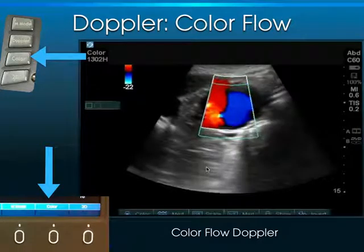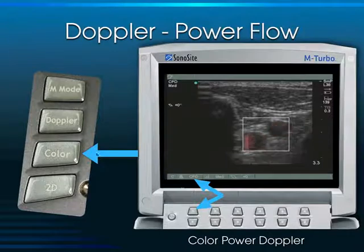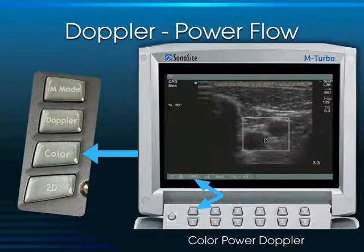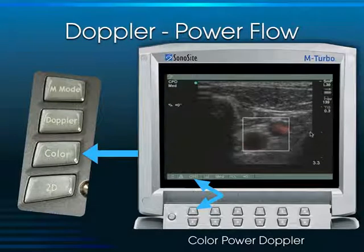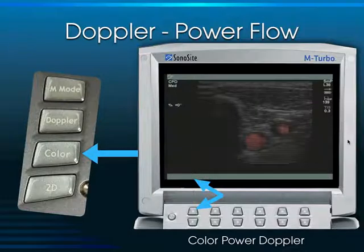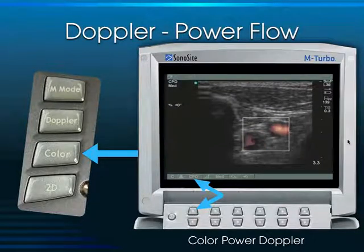After color flow, there's power flow. Once color is on, you toggle to power flow, which appears as orange-only — it's not directional. Power flow is much less angle-dependent and easier to work with than color flow. It's also a more sensitive type of flow used at low flow states, such as in the lymph nodes or the testicles.